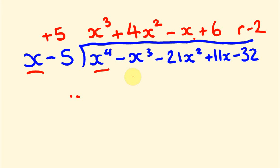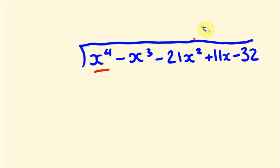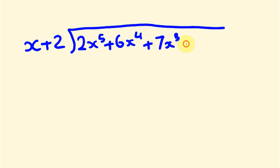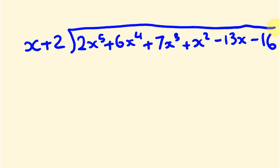Let's have a look at another example — we'll do one equally as big. So we'll divide x plus 2 into 2x to the 5, plus 6x to the 4, plus 7x to the 3, plus x squared, minus 13x, minus 16. Let me extend the line there — and we'll directly divide this now.